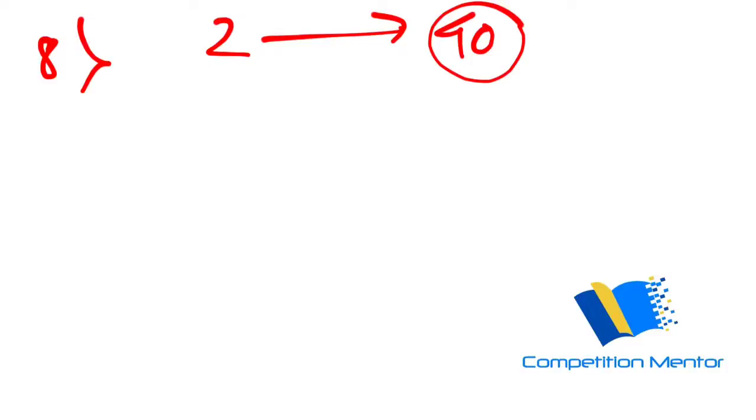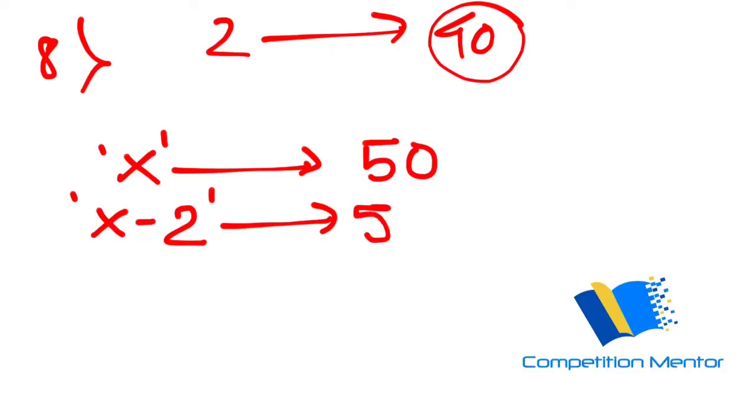the average of the remaining group increases from 50 to 52. So we don't know how many people were there initially, but their average was 50. But now 2 people left the group, so it went up to 52.